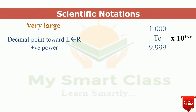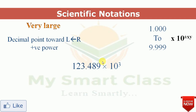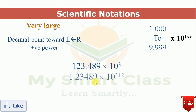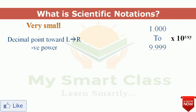Let's take another example: 123.489 × 10³. This is not in scientific notation because 123 is greater than 9.999. We shift the decimal point from right to left — one time and two times — so the power increases by 2. We add 2 to the existing exponent of 3, giving us 1.23489 × 10⁵.